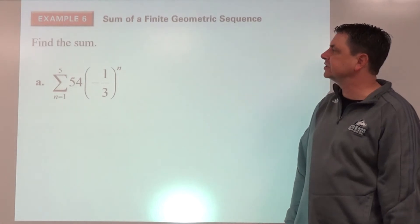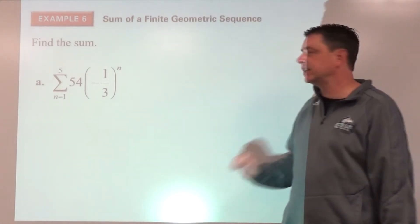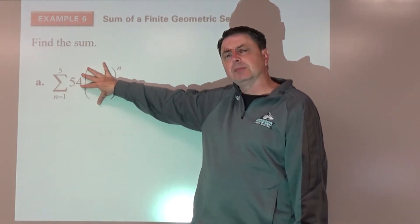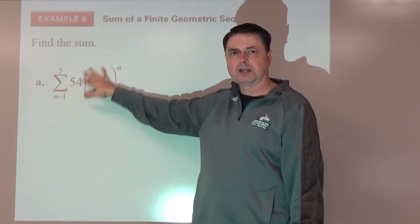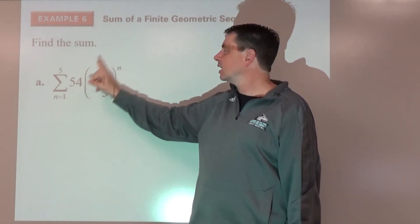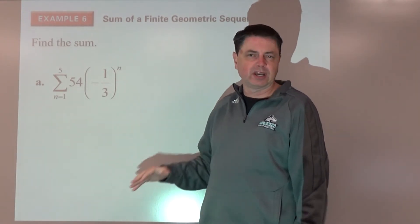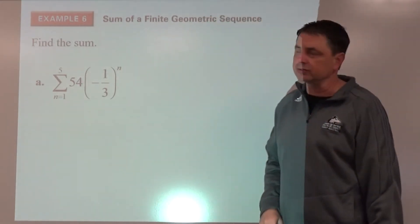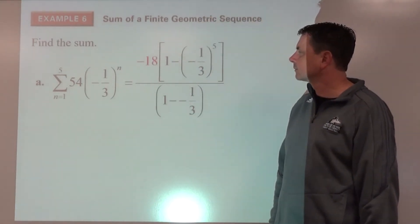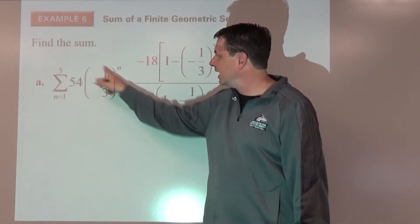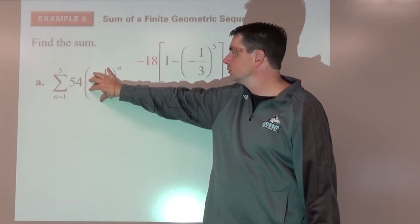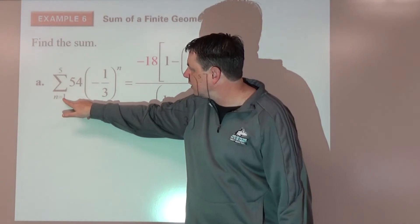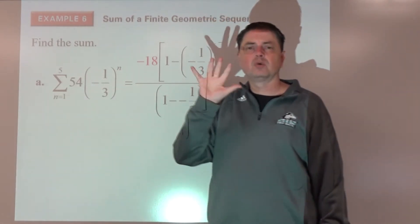Find the sum using sigma notation. We know a series is geometric when we have an exponential expression — some number times a base to the power of n or n minus 1. Whatever's being raised to a power is your r value. We need a-sub-1, r, and n. Starting at 1 and ending at 5, we're doing s-sub-5.